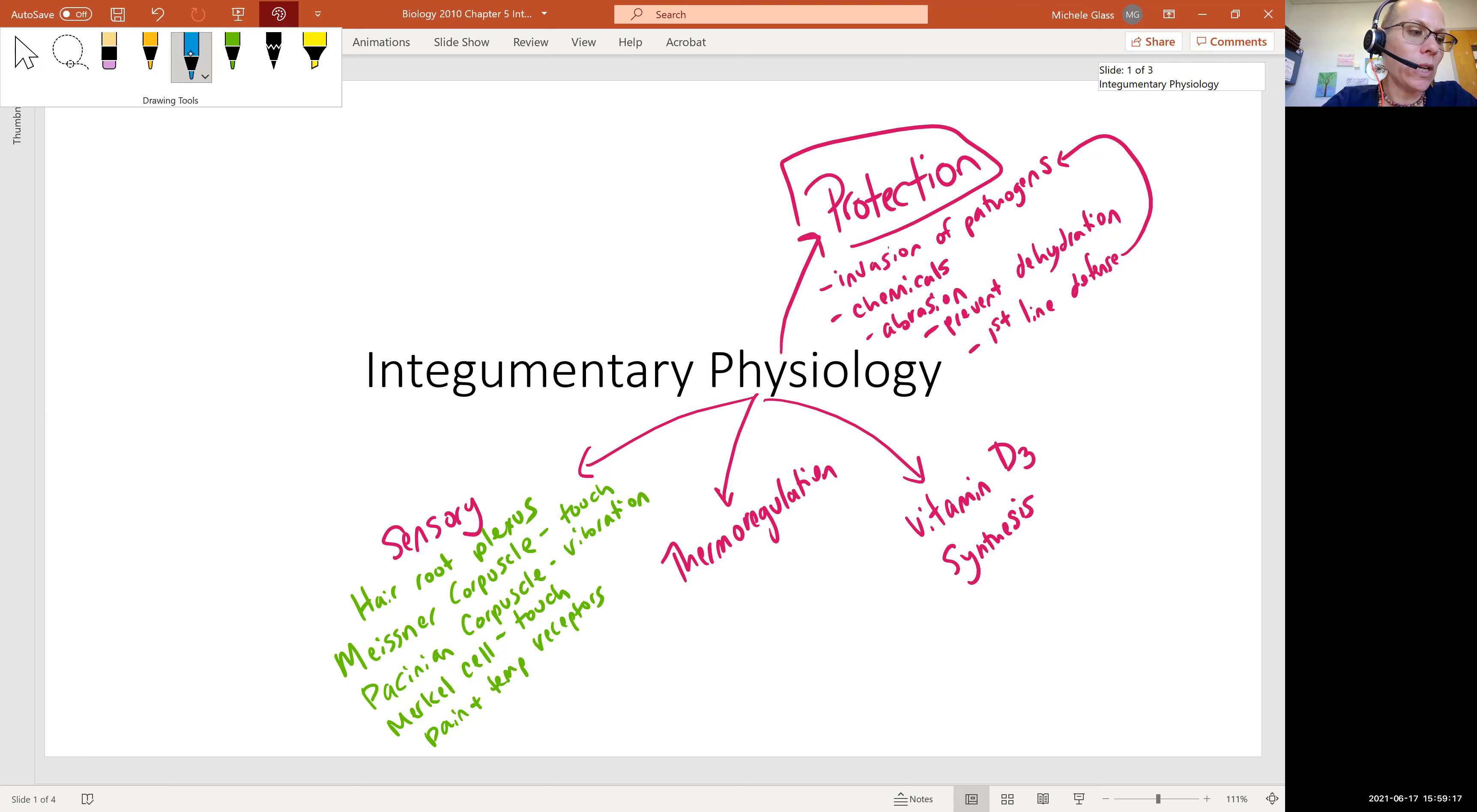When we talk about thermoregulation, we're talking both about keeping the body warm and keeping the body cool. So here in terms of keeping the body cool, we have the evaporative cooling that we saw from the eccrine sweat gland. We get dilation of blood vessels in order to dissipate heat out into the environment. We kind of referred to that when we talked about skin pigmentation.